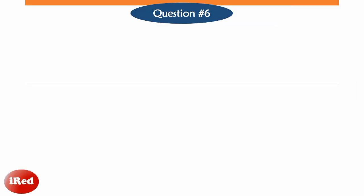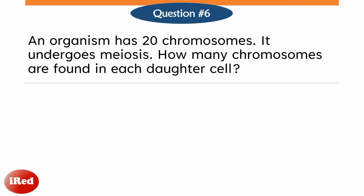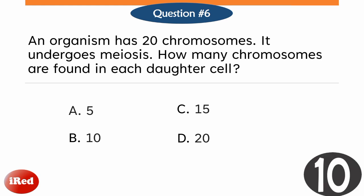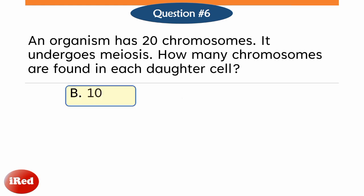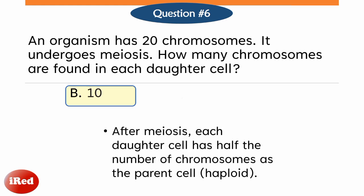Question number six. An organism has 20 chromosomes. It undergoes meiosis. How many chromosomes are found in each daughter cell? Letter A, five; B, 10; C, 15; or letter D, 20. The correct answer is letter B, 10. After meiosis, each daughter cell has half the number of chromosomes as the parent cell.